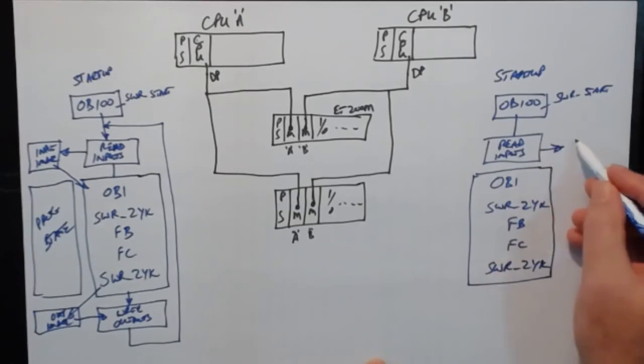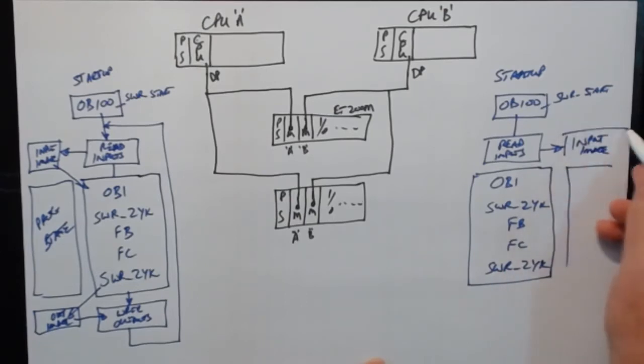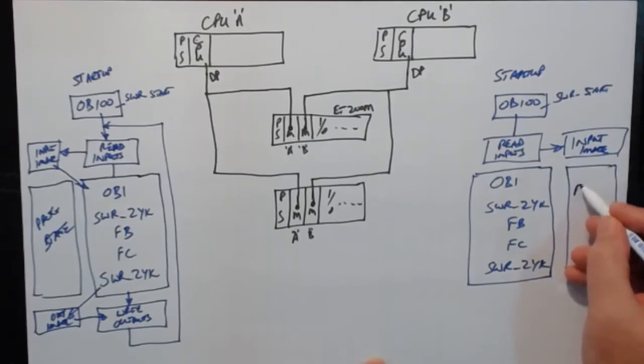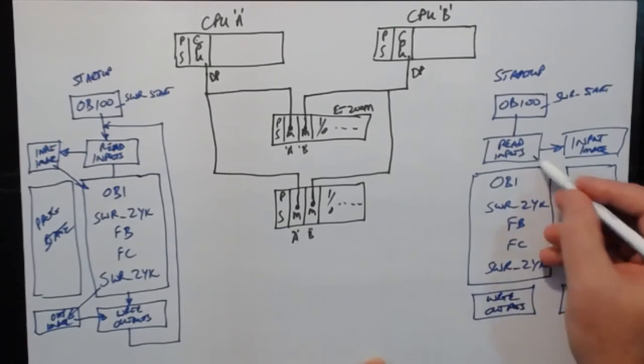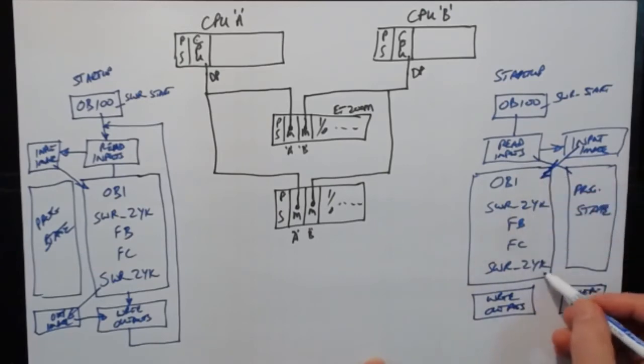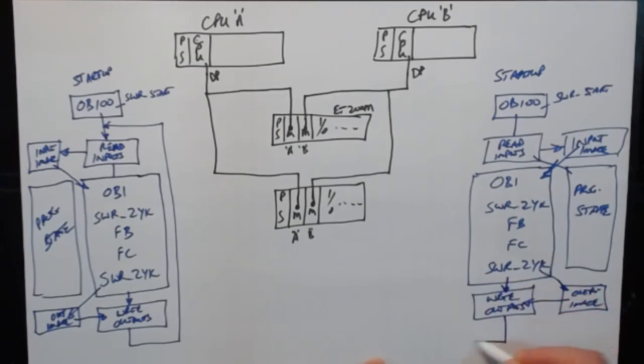And again we read these inputs into our input image. We update our program state. And we have an output image and we write out the outputs. Exactly the same. We are reading the input image to the program. The program writes the output image. End of the program, end of OB1 we write out the outputs and then go back into our main loop. Exactly the same again.